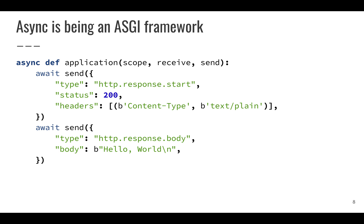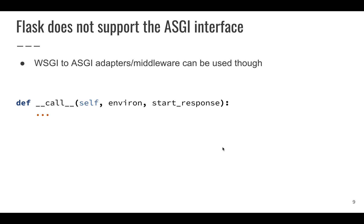Another definition of async is being an ASGI framework. ASGI means the framework itself — the Flask app — needs to be called with a scope, a receive, and a send. Flask does not support the ASGI interface; it is a WSGI app. You can use WSGI-to-ASGI adapters or middleware, which I'll talk about later, but inherently Flask is called with an environment and a start_response — the WSGI interface.